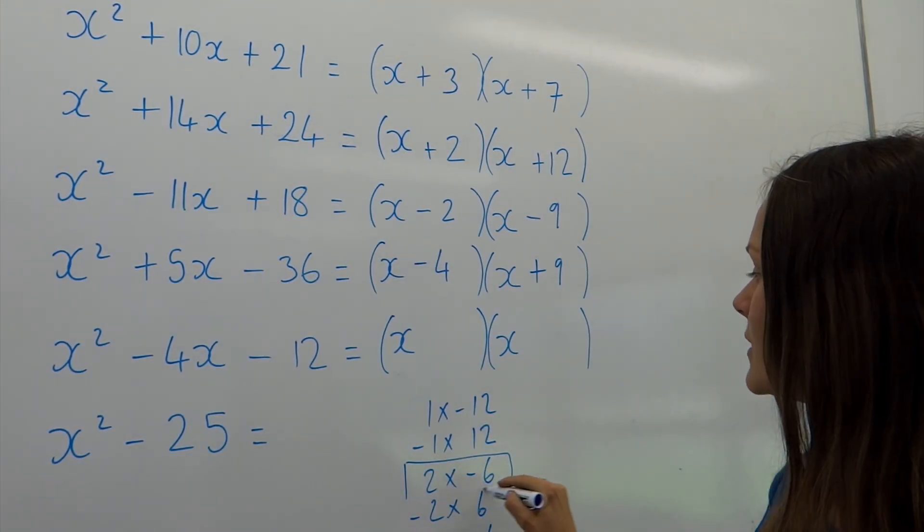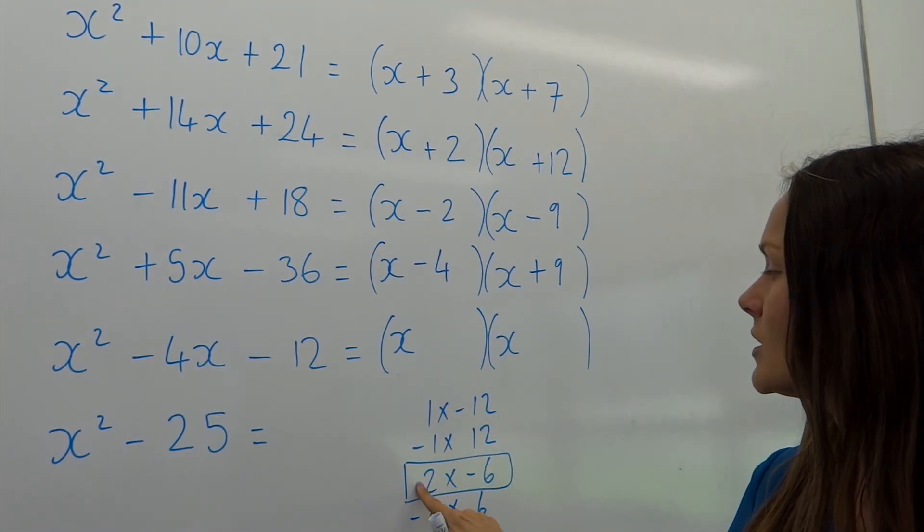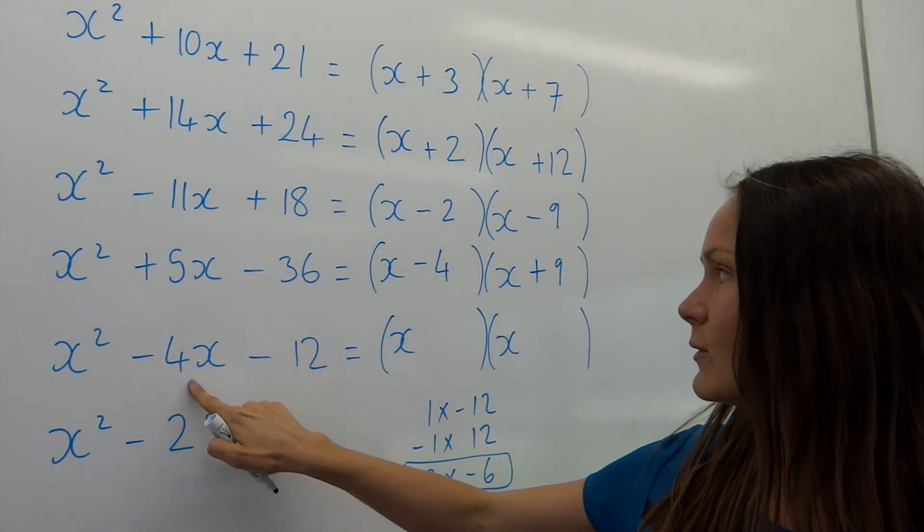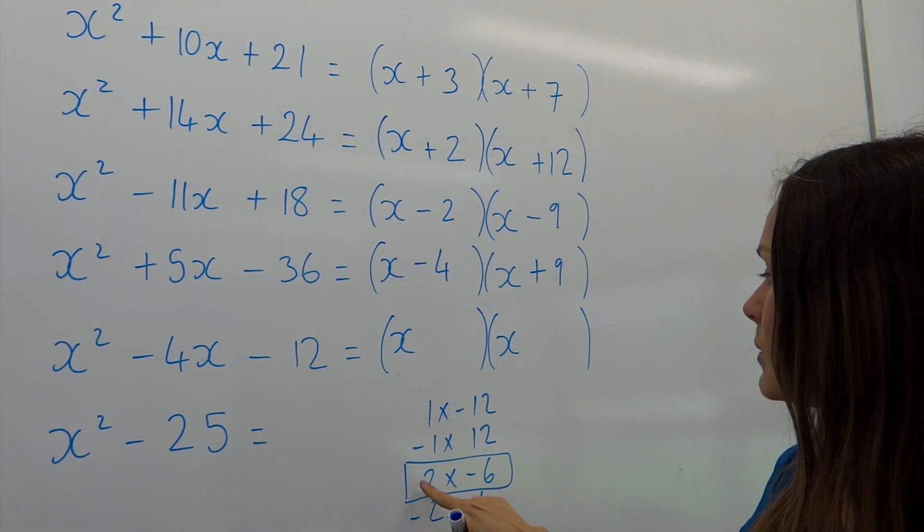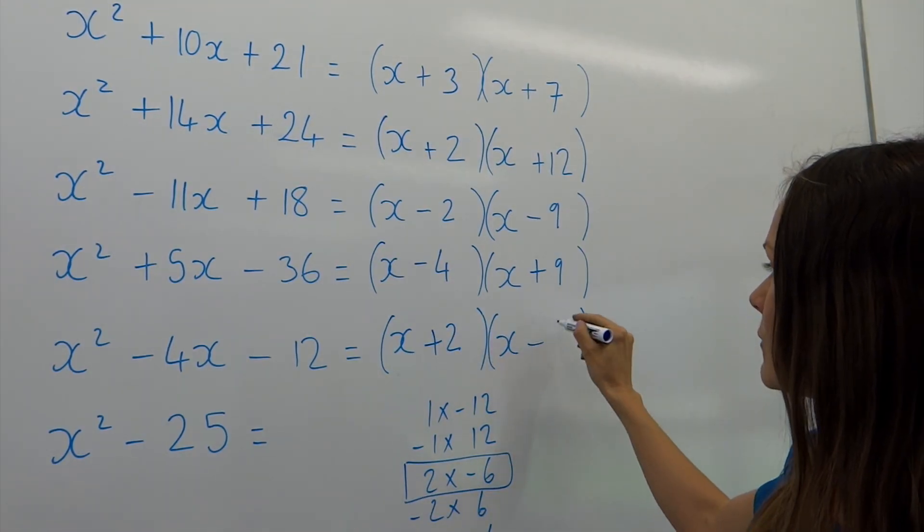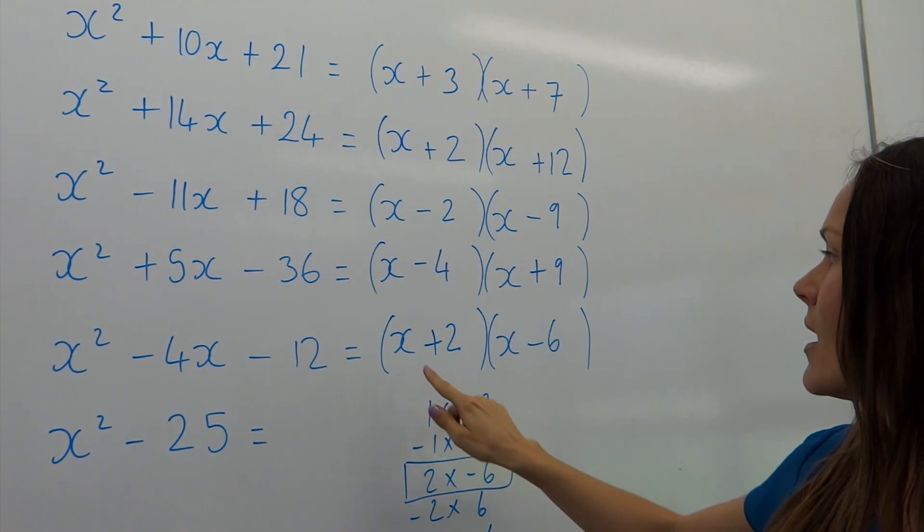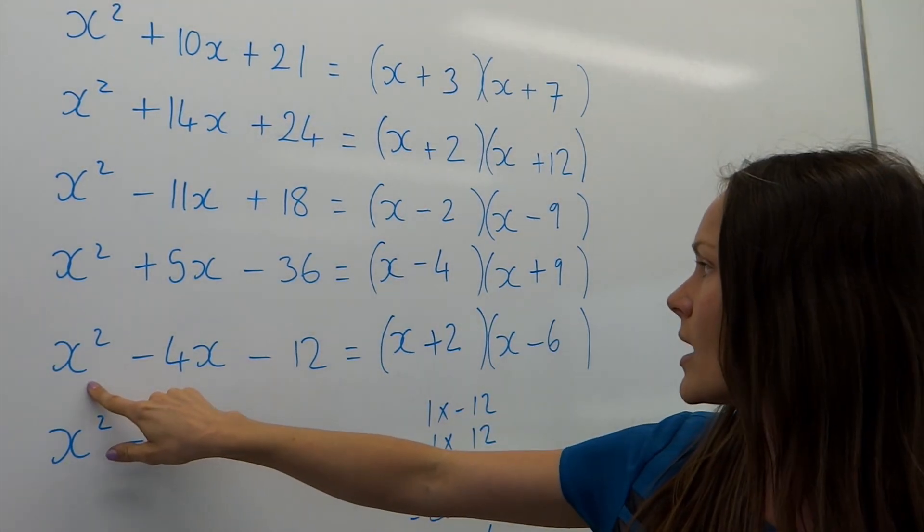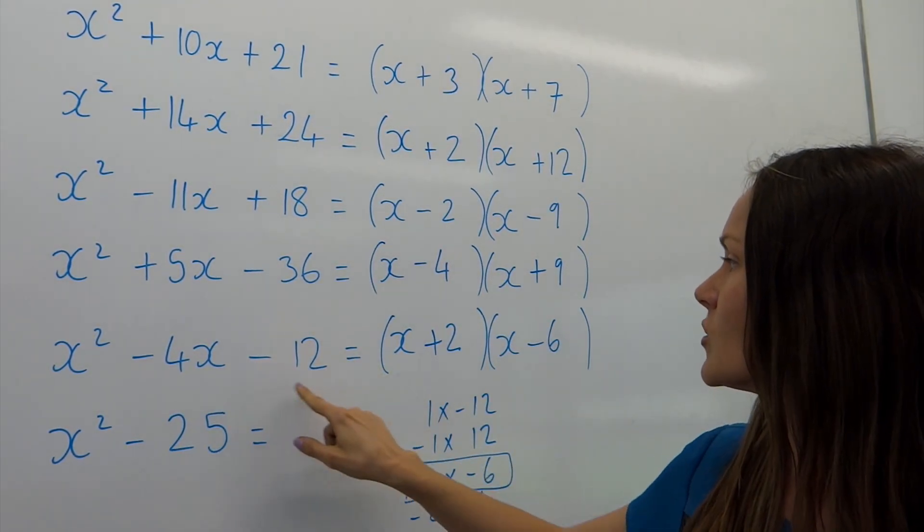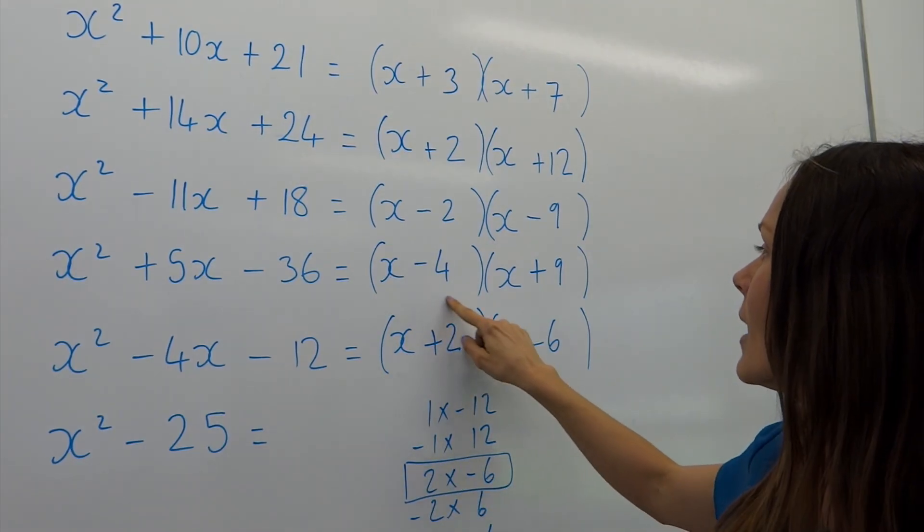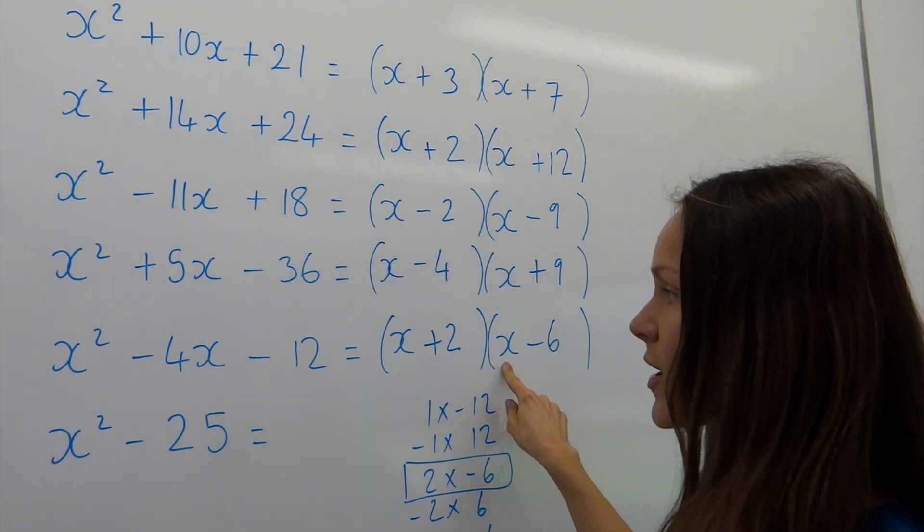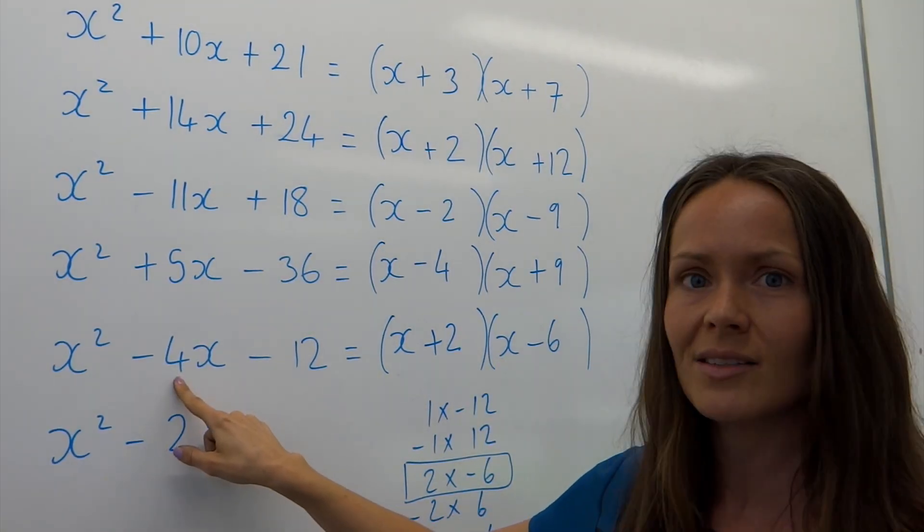Because positive 2 plus negative 6 gives me the negative 4. So the 2 is positive, so I put plus 2, and the 6 must be negative. So x times x gives me the x squared, 2 times minus 6 gives me this one here, minus 12. And then you've got your minus 6x plus 2x, which would simplify to give negative 4x.